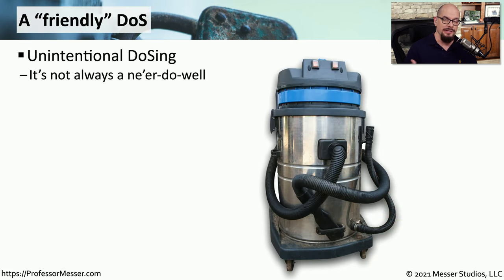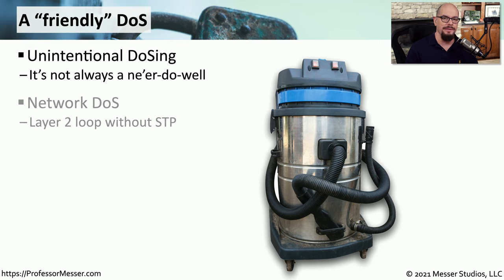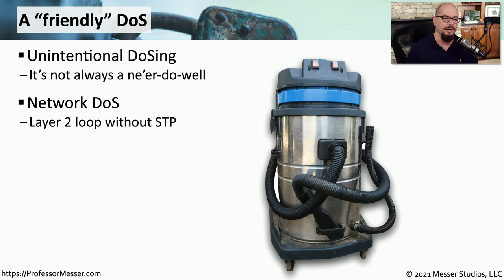Sometimes we cause these problems ourselves — it doesn't always have to be an attacker causing a denial of service. For example, if you plug in the wrong cables to the wrong switch, you may inadvertently create a loop in your network and cause the entire network to become unavailable. That's why we always recommend turning on spanning tree protocol so that you won't inadvertently cause these types of layer two loops.